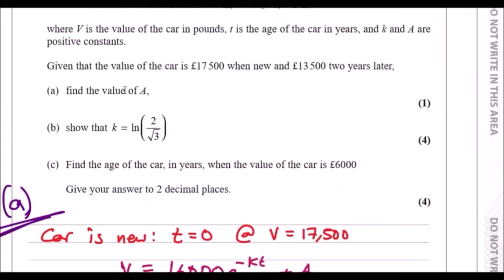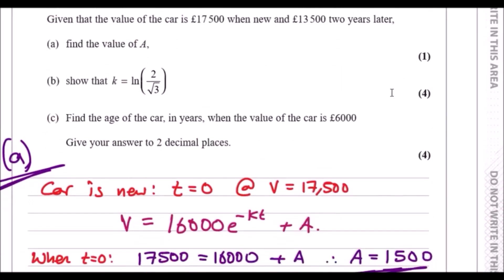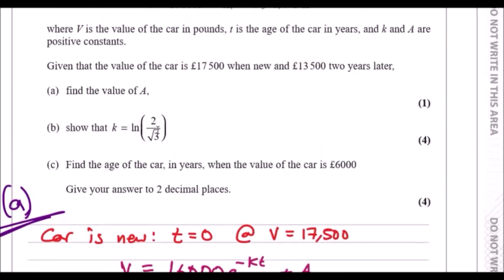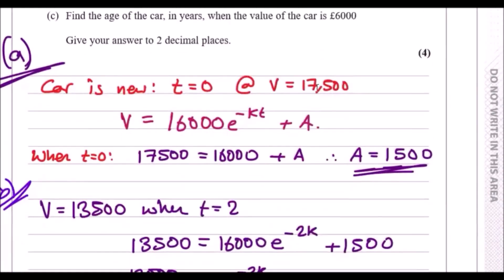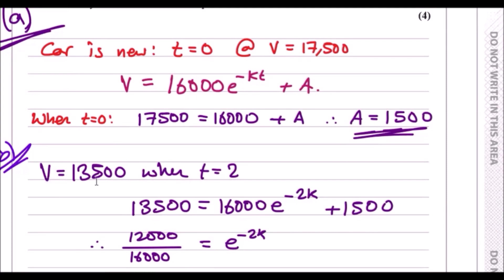Now show that k equals the natural log of 2 over root 3. You can get this by using t equals 2, the second information. The value of the car is what they told you when t is 2. Using the original formula, plug in what you know: the value at 13,500, the value of a being 1,500, and t is 2, so k times 2 is 2k.